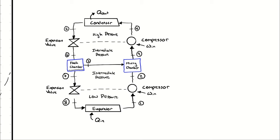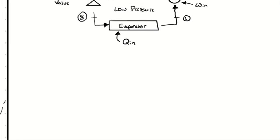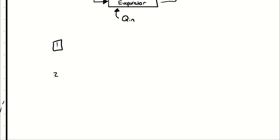The reason I need enthalpies for all nine state points is because I want to calculate the work in, the heat in, the work out, and the heat out. From those I can determine a net work, a net heat transfer, and a coefficient of performance. Then from those and the mass flow rates, we can figure out the power input, the rate of heat removed from the refrigerated space, and so on. So I want nine state point properties.